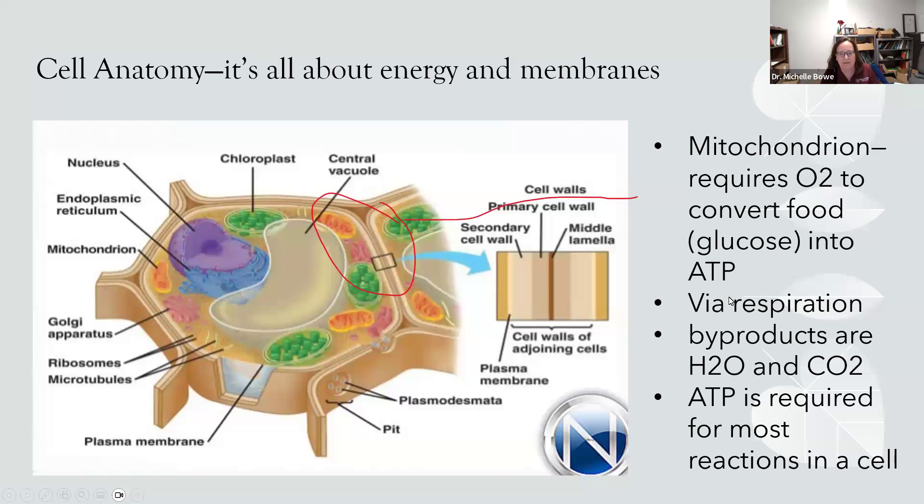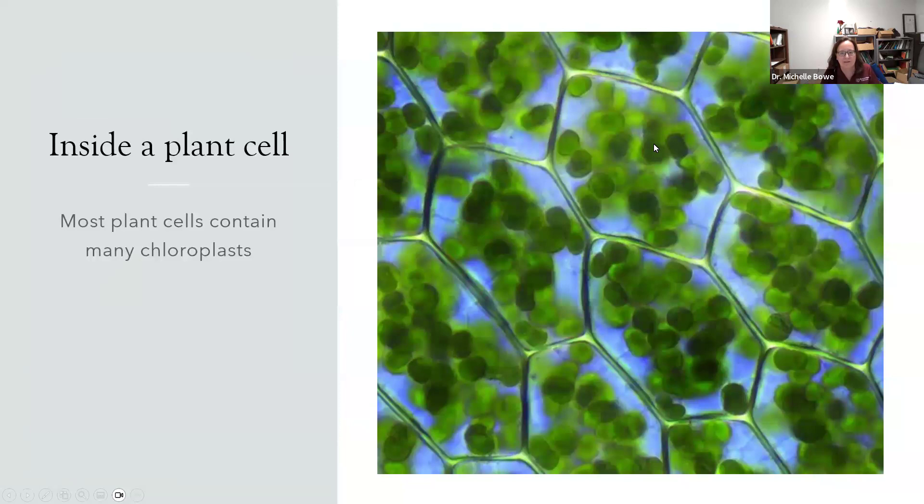Respiration requires oxygen to break down glucose and make it into ATP. The byproducts of this are water and carbon dioxide. So all cells have to have respiration, and all cells will release carbon dioxide and water. ATP is a very important molecule in the cell, and it's required for just about everything that goes on in the cell. So all of that growth and responding and reproducing and everything else requires ATP. Hornwort cells only have one chloroplast, and that's one way to tell a hornwort from a liverwort.